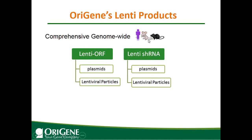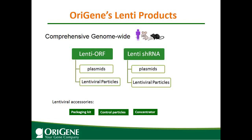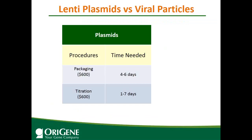For both products, there are two formats. One is plasmid — the ORF or shRNA cloned into a lentiviral vector that you package in your lab. The other format is pre-titered, ready-to-use lentiviral viral particles that you can just receive and add to your cells. Lentiviral accessories include the packaging kit, control particles as a negative control, and a lentiviral concentrator to concentrate lentivirus and get higher viral titer.